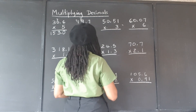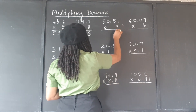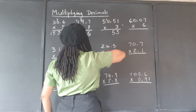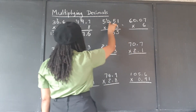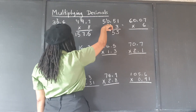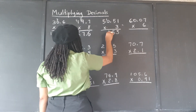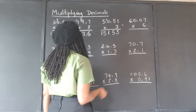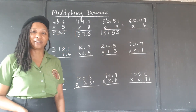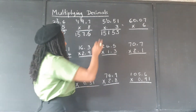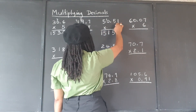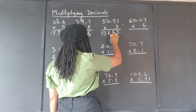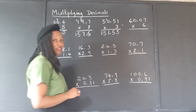50.51 times 3. 3 times 1 is 3. 3 times 5 is 15 — put the 5 down, carry the 1. 3 times 0 gives 0, plus 1 is 1. And 3 times 5 is 15. In the multiplicand, the number at the top, we have two decimal places to the right of the decimal point, so we put back one, two decimal places in the answer.